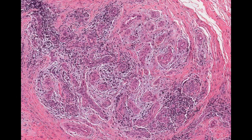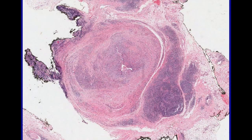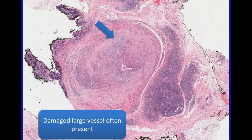Sometimes the inflammation can be relatively sparse and eosinophils are very scarce, so in cases like that, when you don't have much of the infiltrate, it can be challenging to make the diagnosis. Oftentimes this lesion will arise from a damaged blood vessel, particularly the temporal artery, so the temporal region of the head is a very common site. If you're lucky, you'll find a damaged thick-walled vessel from which the proliferation is growing, and that's a useful clue to the diagnosis.